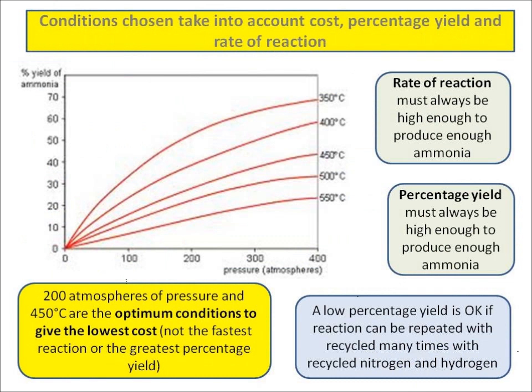My rate of reaction must always be high enough to produce enough ammonia. Equally, my percentage yield must always be high enough. A low percentage yield is alright if I can repeat the reaction again and again very quickly with recycled nitrogen and hydrogen. In essence, what I want is the optimum conditions to make me the most money at the lowest cost — and those conditions are 200 atmospheres and 450 degrees centigrade. They don't give me the fastest reaction or the greatest percentage yield, but they cut down on my costs the most.